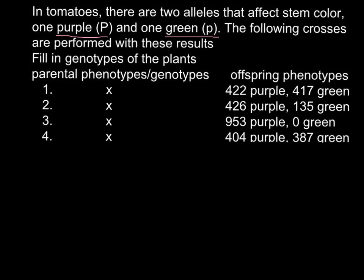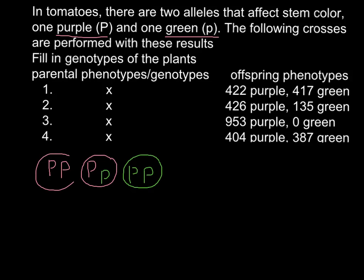One possible genotype is capital P capital P, and this is going to be a purple stem. Another genotype that is possible can be capital P and small p, and this is also going to be phenotypically a purple stem. The last possible genotype can be small p small p, and this is going to be a green colored stem plant.